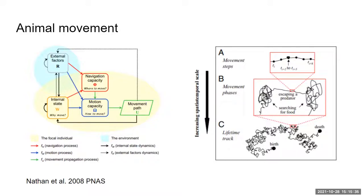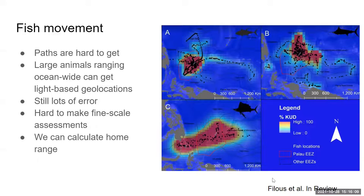Ran Nathan works with birds and bats and has the joy of using GPS tags that get positions with very high accuracy at very frequent intervals. We don't have that in aquatic ecology — we are dealing with much more difficult data, which is why this is an interesting subject. For fish movement and paths, this is an unpublished figure from Dr. Alex Feluce, who is working in Palau on marine megafauna movements with satellite tags using light-based geolocation.